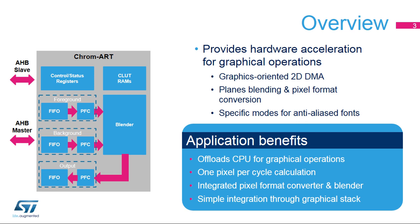The Chrom-ART Accelerator offers true hardware acceleration for graphical operations. It is built around a 2D DMA engine for fast data copy with specific functions to support pixel format conversion, as well as blending operations between two planes. It also provides specific modes for managing anti-aliased fonts. The Chrom-ART Accelerator will offload the CPU for most graphical operations with a 1-pixel-per-cycle throughput, integrated pixel format conversion, and blending.